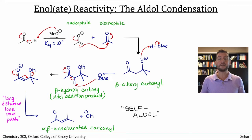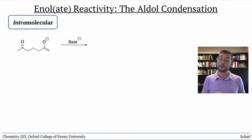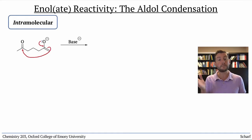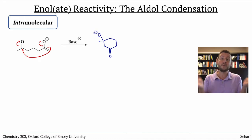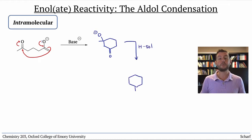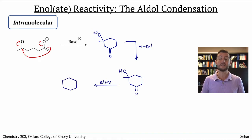Two other variants of the aldol condensation exist. Intramolecular aldol reactions involve an enolate from one part of a molecule reacting with a carbonyl group within the same molecule. These reactions produce new cyclic structures, usually cyclopentenes or cyclohexenes.